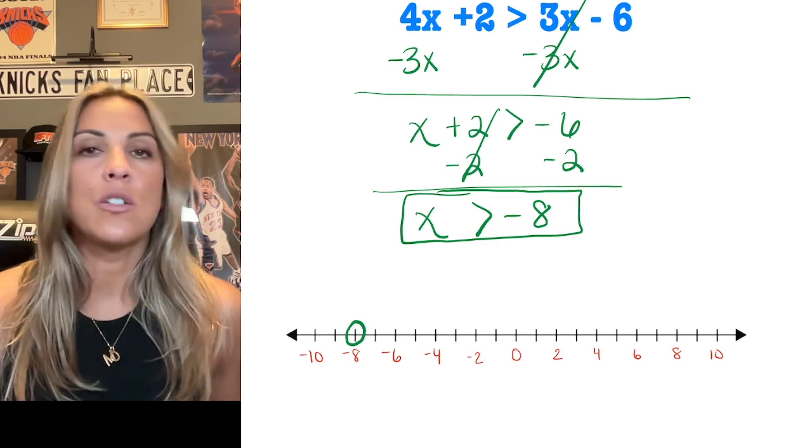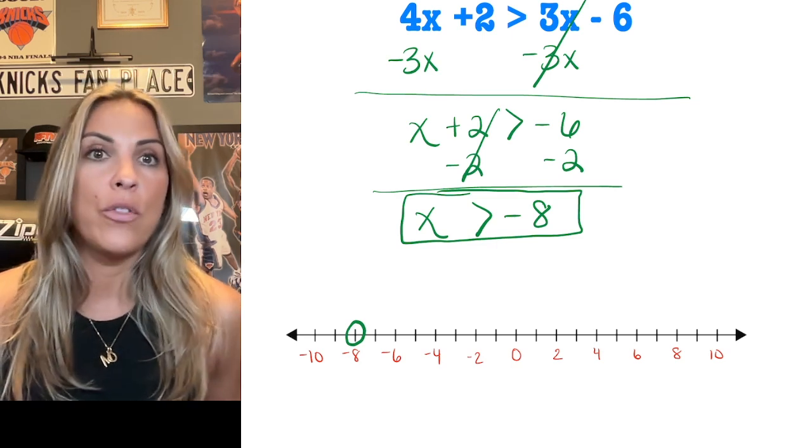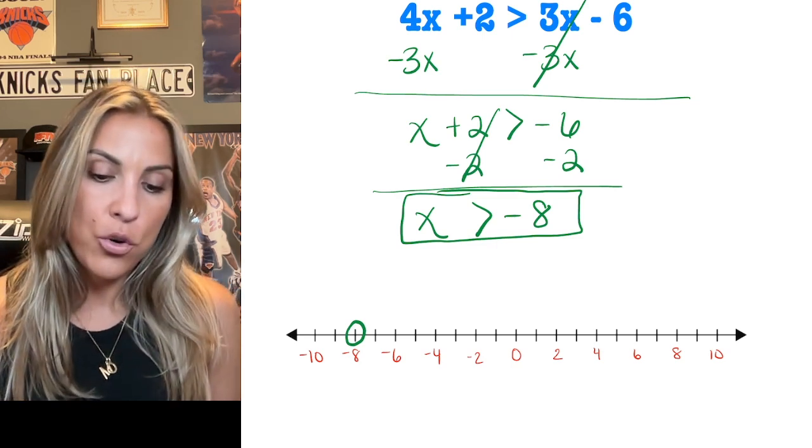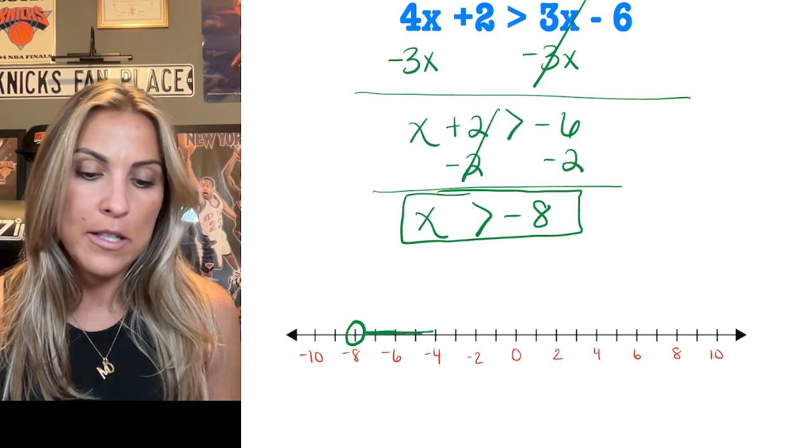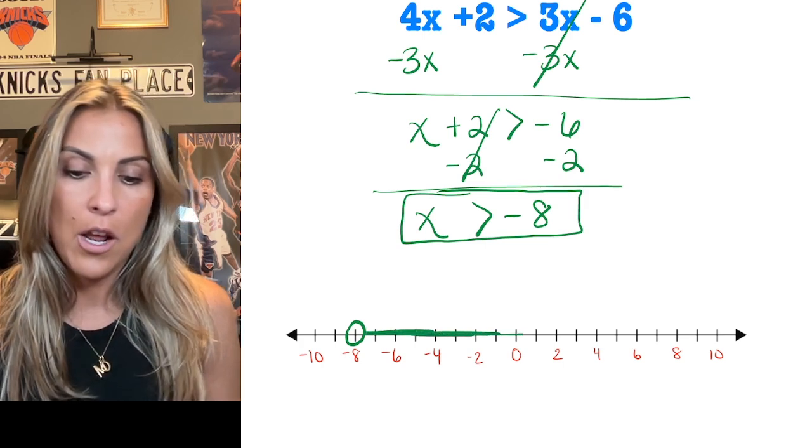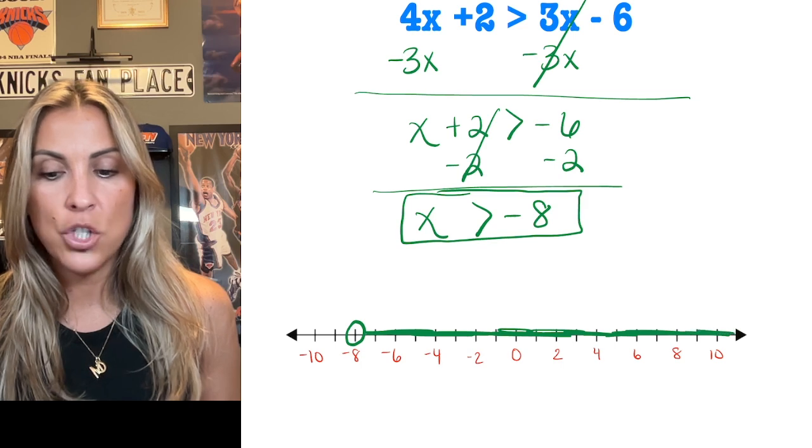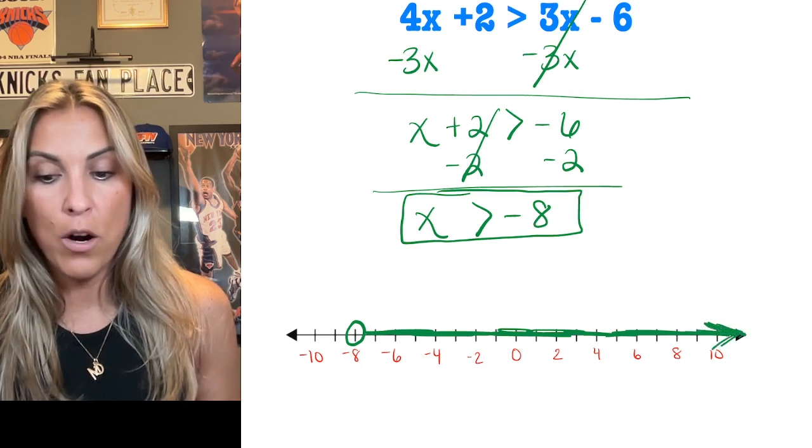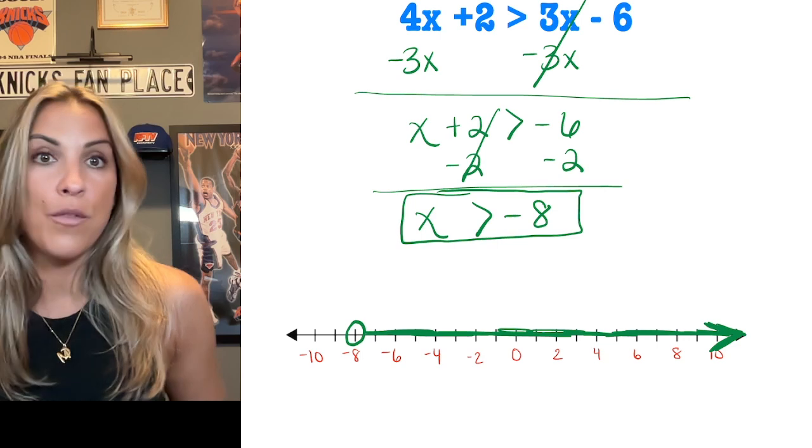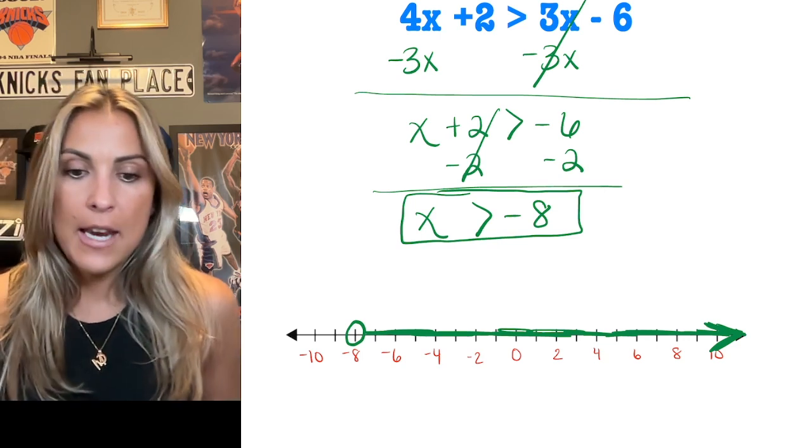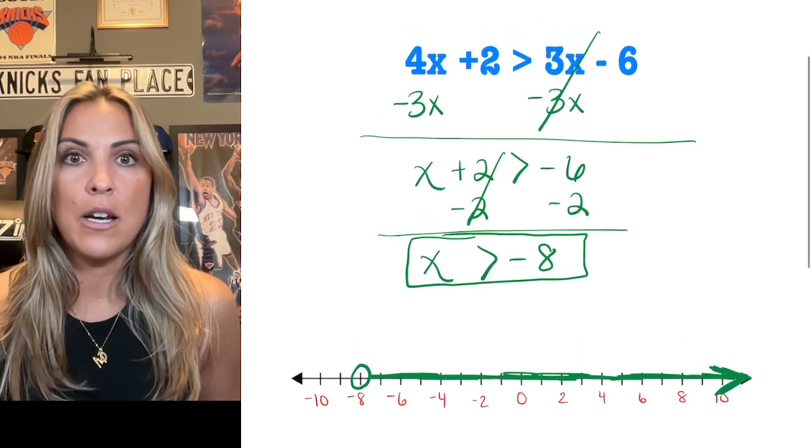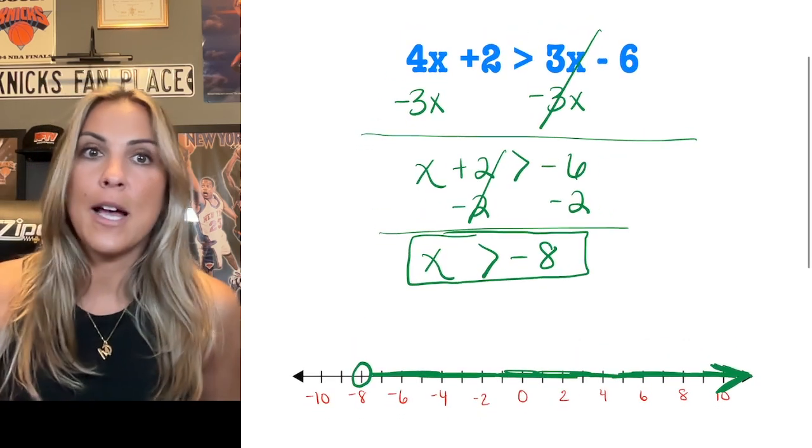And now what I want to shade is all the numbers that are greater than negative 8. So the numbers that are greater than negative 8 are going to be to the right of negative 8. So I'm shading that whole number line. I'm going to shade an arrow at the end to show that there are infinitely more elements of this solution set, which includes all of the positive numbers. And that is how you solve and graph an inequality that has variables on both sides.